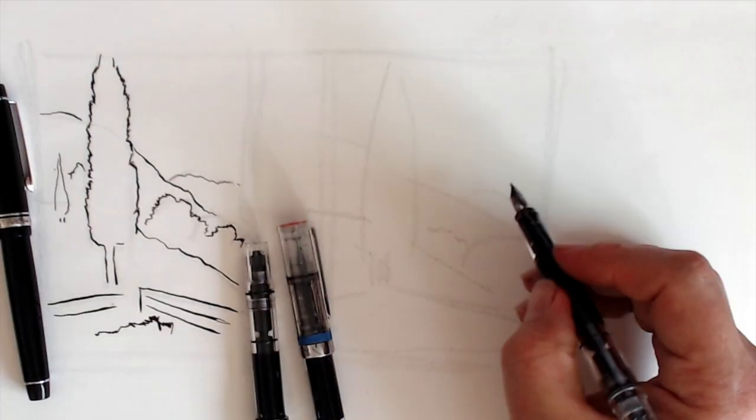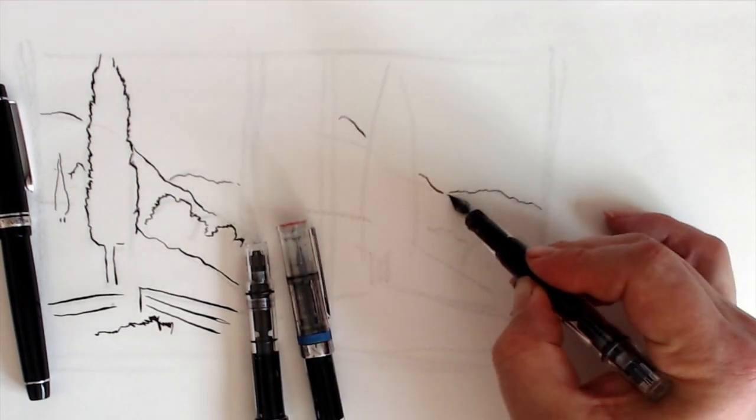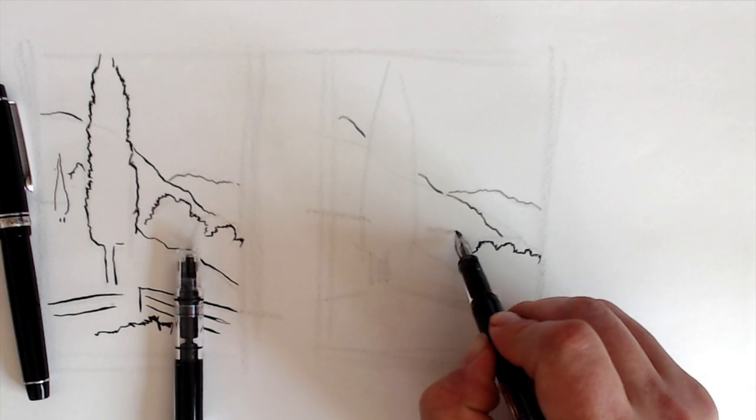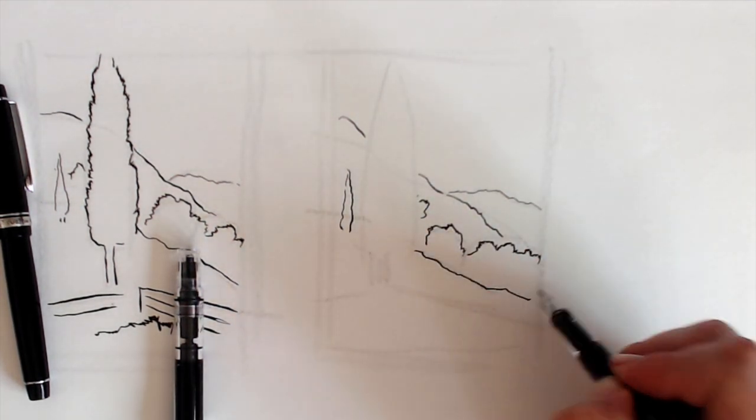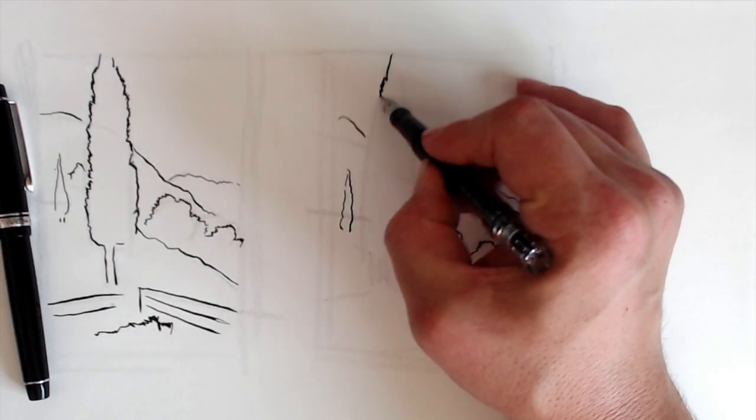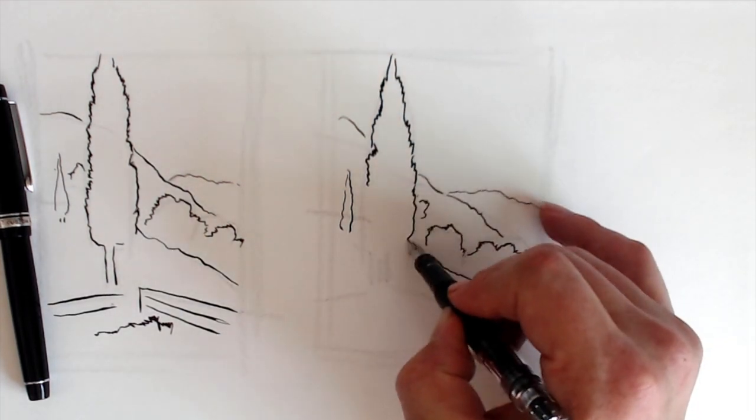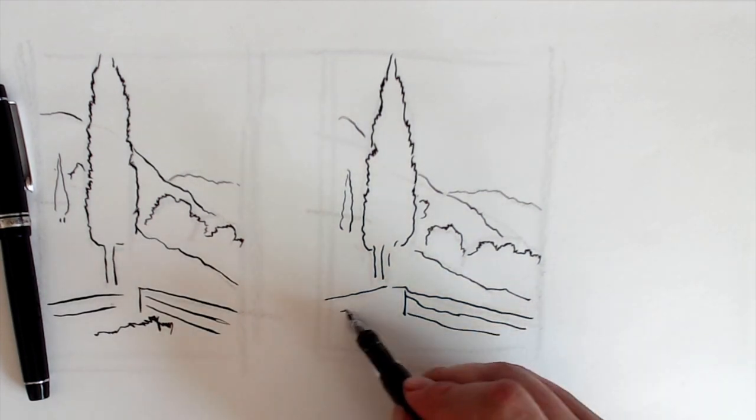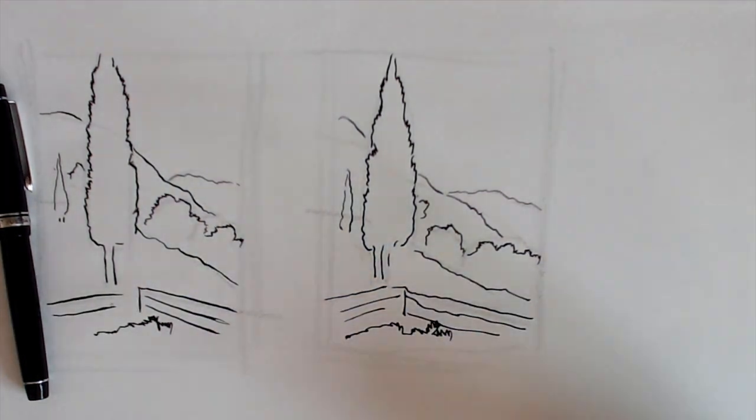Now, of course, many artists will utilize pens of different widths for this purpose, which is fine, and I do it too. In the second example, I'm doing the same thing, but with three Twsbi Ecos of different widths: a fine, a medium, and a broad. This method is easier to control, but doesn't give you the subtle transitions that a flex pen provides. Besides, with a flex pen, you can do everything with a single pen without having to carry a bunch of different pens around.